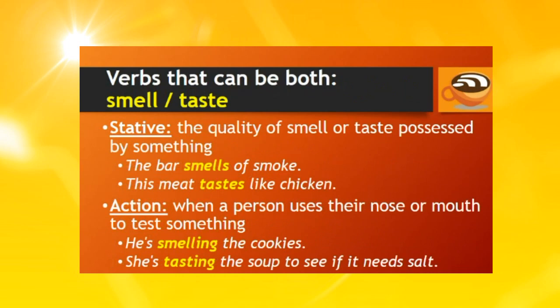Smell and taste are stative verbs when describing the quality of smell or taste possessed by something — for example, 'the bar smells of smoke' or 'this meat tastes like chicken.' Smell and taste are action verbs when a person uses their nose or mouth to test something — for example, 'he's smelling the cookies' or 'she's tasting the soup to see if it needs salt.'